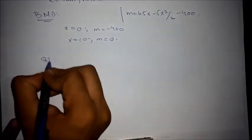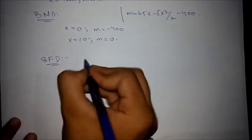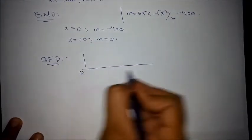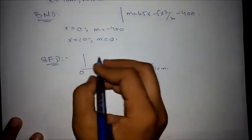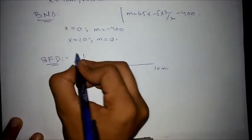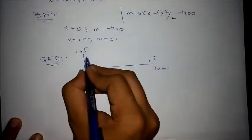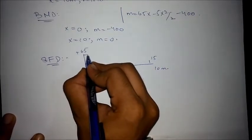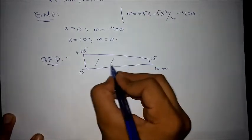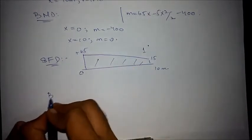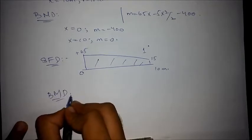The shear force diagram would be from 0 to 10 meters. At this point the shear force is plus 65, and at this point it is plus 15. That's a first degree curve.